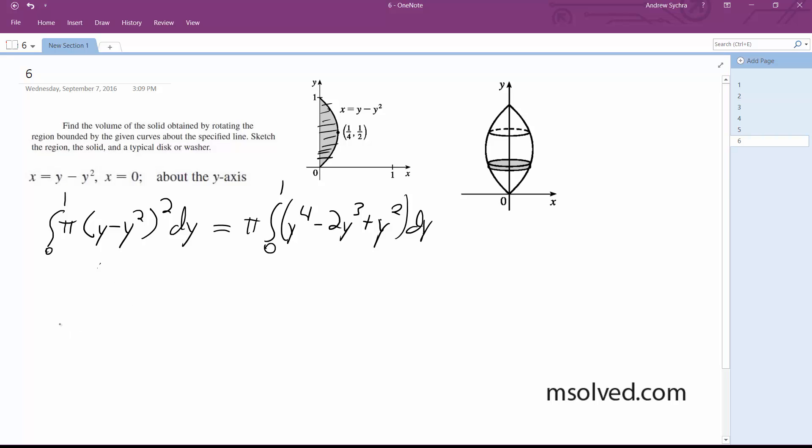So this ends up being pi times 1/5 y to the 5th minus 1/2 y to the 4th plus 1/3 y to the 3rd, from 0 to 1.